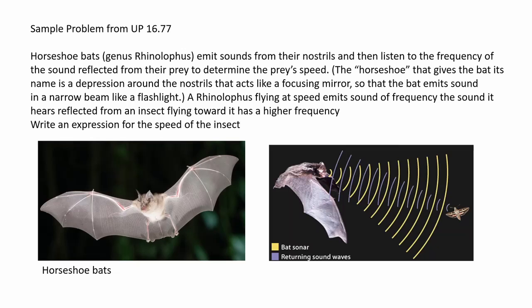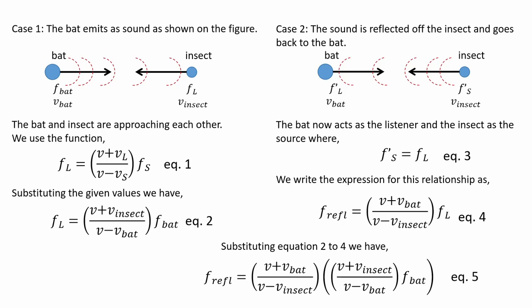As shown in the figure on the right, a bat is approaching an insect. As it approaches, it emits a sound and that sound is reflected back towards the bat. For case one, the bat emits a sound as shown in the figure.